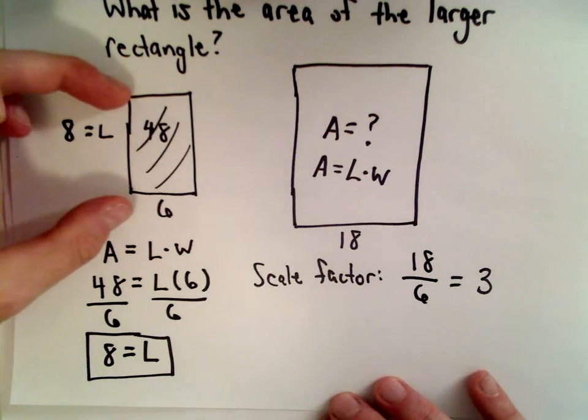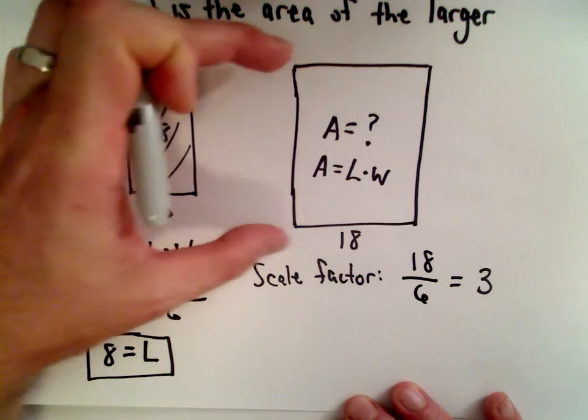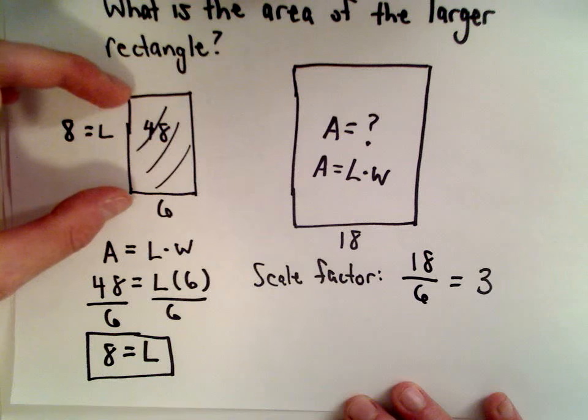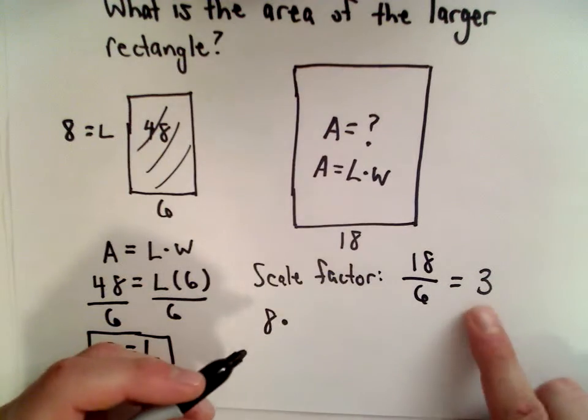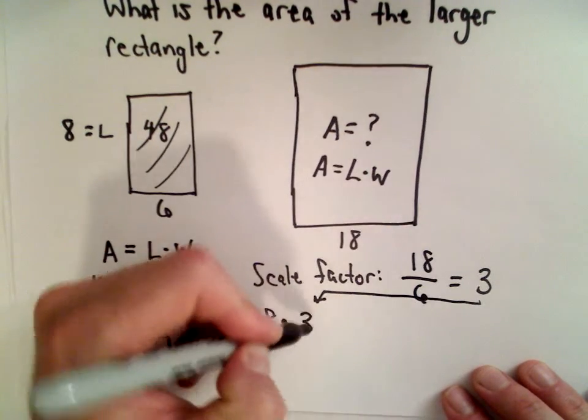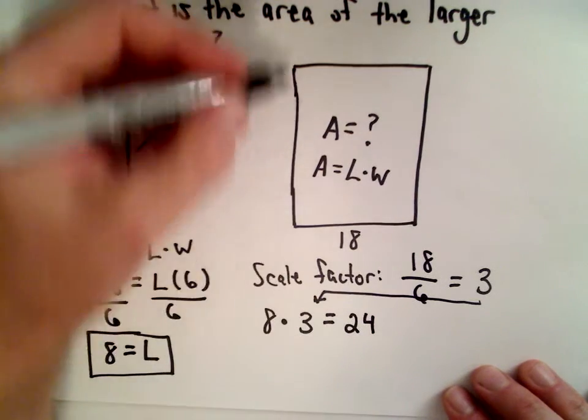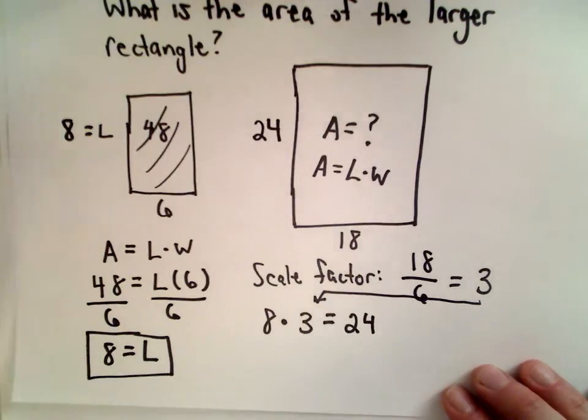The same thing, when we look at the length, or the height, it's going to also go up by a factor of 3. So the height on the smaller rectangle is 8. Well, if we multiply that by our scale factor, which is 3, 8 times 3 is 24. That means that the length on our larger rectangle is going to be 24.